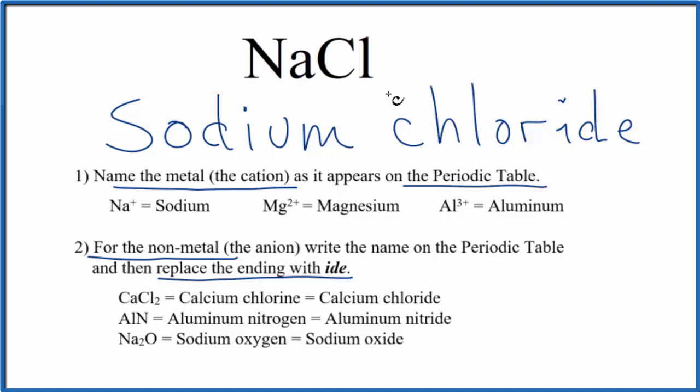If you were given the name and asked to write the formula, you'd need to know that sodium on the periodic table's in group 1, it has a 1 plus ionic charge. And then the chloride, chlorine, forms ions with 1 minus as its ionic charge.